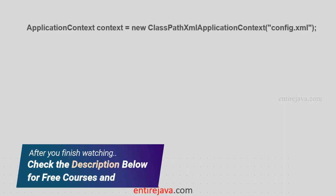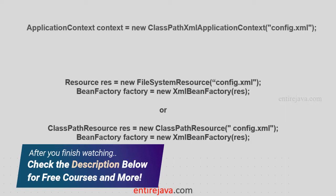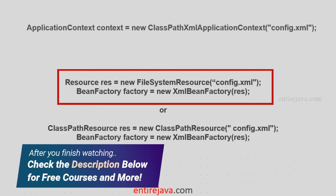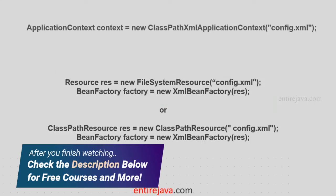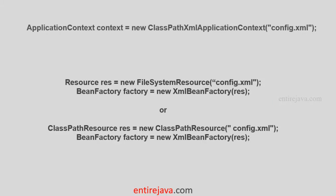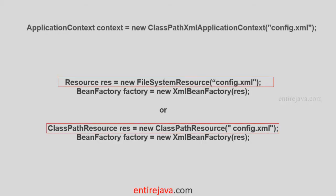In order to define the Bean Factory, you have to include a couple of instructions. One is to create the resource object, and the other is to create the Bean Factory itself by passing that resource as an argument to its constructor. Just as we have multiple variants of Application Context depending on where the config file needs to be read from, we have the same in case of Bean Factory as well. So you would create the resource object accordingly and pass it as an argument to Bean Factory.